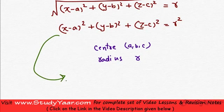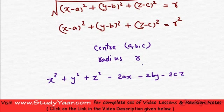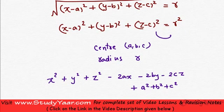If you just expand it, you can write it as x square plus y square plus z square minus 2ax minus 2by minus 2cz, and then you have a square plus b square plus c square. Taking r square to the other side, you get minus r square equal to 0.